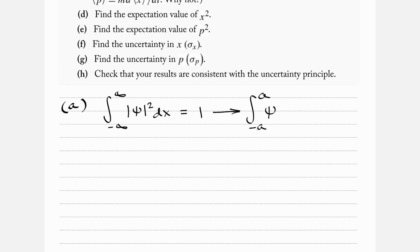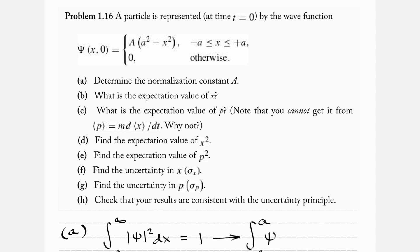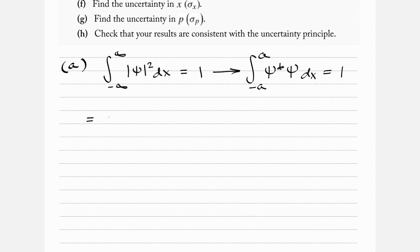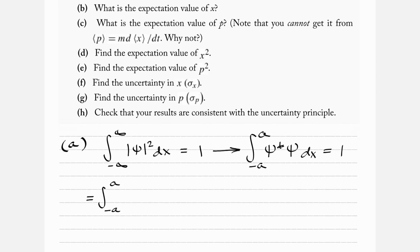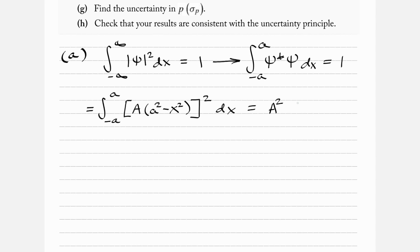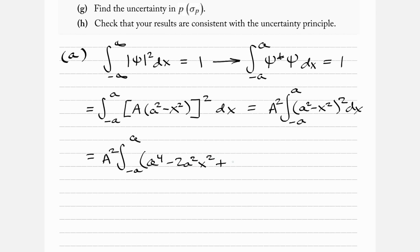We do psi star psi, so psi squared dx equals 1. Since there's no imaginary part, psi and psi star are the same thing. So we have the integral from minus a to a of A times (a² minus x²), that whole thing squared, which equals A² out front times the integral from minus a to a of (a⁴ minus 2a²x² plus x⁴) dx.